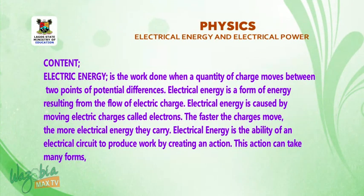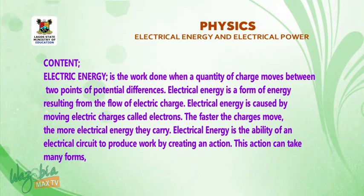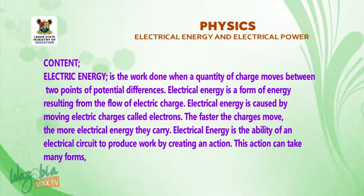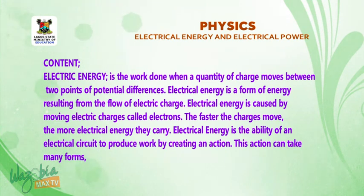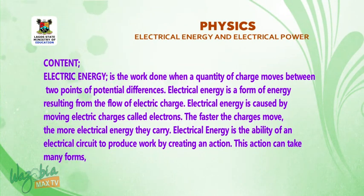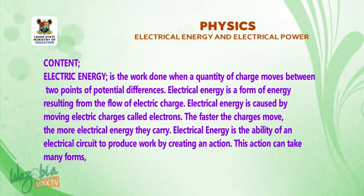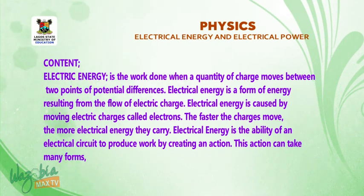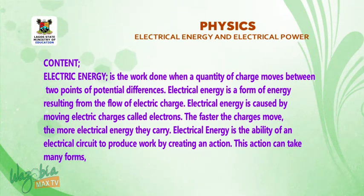What is electrical energy? Electrical energy is the work done when a quantity of charge moves between two points of potential difference. Or, electrical energy is a form of energy resulting from the flow of electric charge. It is caused by moving electric charges called electrons. The faster the charge moves, the more electrical energy it carries. Electrical energy is the ability of an electrical circuit to produce work by creating an action.